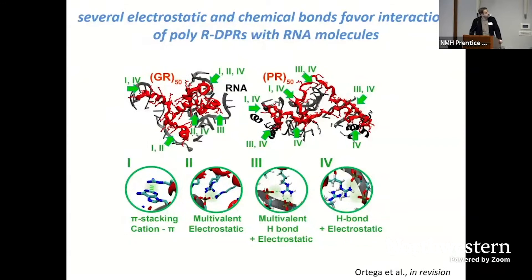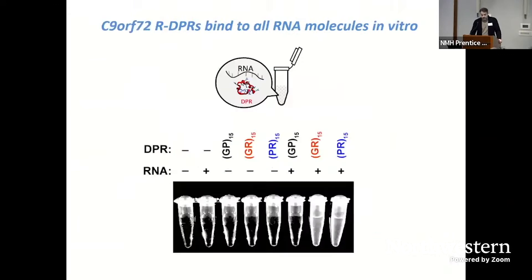To begin to address this question, we used a combination of simulations as well as empirical evidence to characterize the physicochemical properties of the arginine-rich GR and PR. To cut a long story short, our experimental data showcase that several electrostatic and chemical bonds would favor interactions of poly-DPRs with RNA molecules, and the types of bonds that we predicted are shown here.